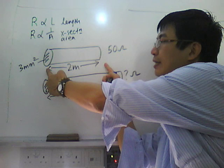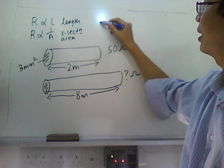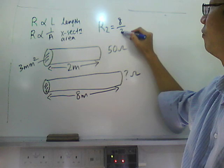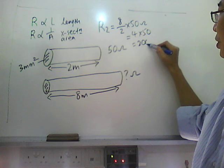Now the length from 2 meter becomes 8 meter, so the length times 4. Therefore, the resistance must multiply by 4. The working will be like this: The new resistance will be 8 over 2, which is 4 times the old resistance. And that will make up to be 4 times 50, which is 200 ohm.